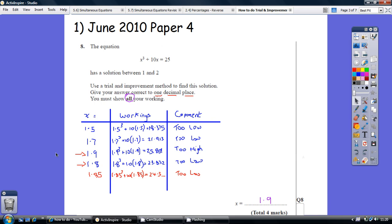This is how you need to lay it out. Set out three columns. First one is going to be your guess of what x is. Middle column, quite a big column, is the workings. And thirdly a comment.